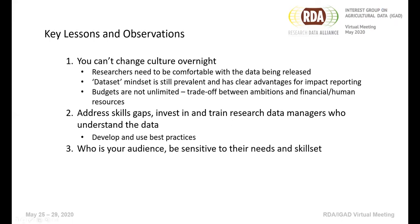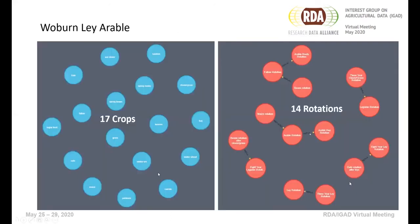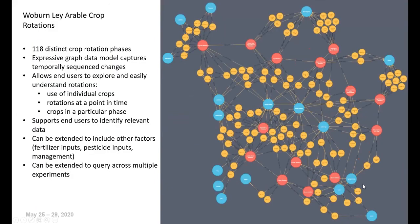We're also doing work using knowledge graphs to describe some of the complexity of our experiments. This is the Woburn Arable experiment — a complex experiment which uses many different rotations as treatments. We've been trying to model this as a way of providing a deeper understanding for end users. With 17 crops and 14 rotations combined, we're quite excited about using this approach to describe the data model for experiments, supporting researchers to dive deeper into complex experiments to identify the data they're after.